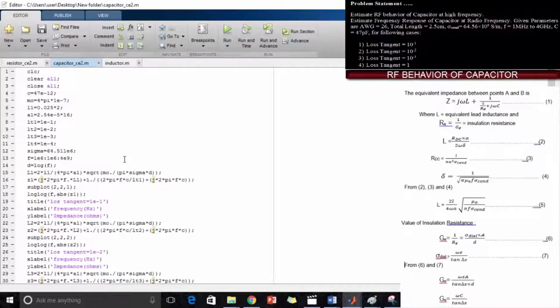This is the MATLAB program for capacitor. Here as you already know, CLC, clear all, close all are the basic functions which we use in MATLAB. C, mu0, L1, A1, all these values are given in the problem statement.